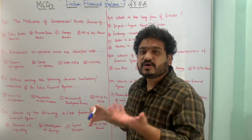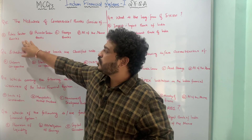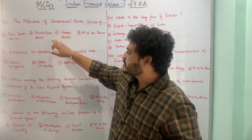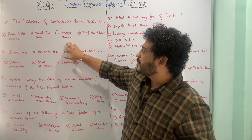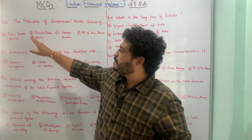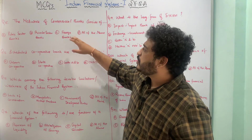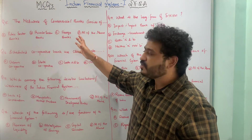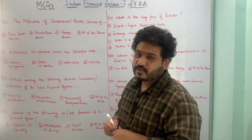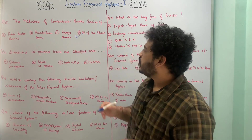The network of commercial banks consists of what? Option A is public sector banks, B is private sector banks, C is foreign banks, and D is all of the above. The network of commercial banks consists of all three — public sector, private sector, and foreign banks — along with regional rural banks. So the correct option is all of the above.